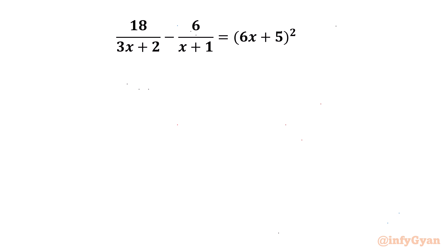Let's get started by noting that our denominators cannot be zero. So x cannot be equal to negative 2 over 3, and x cannot be equal to negative 1.